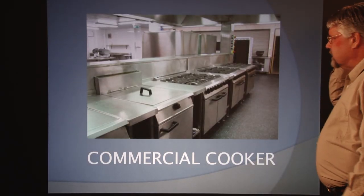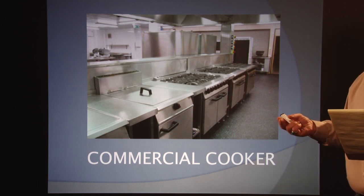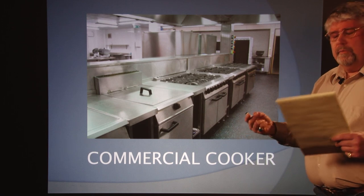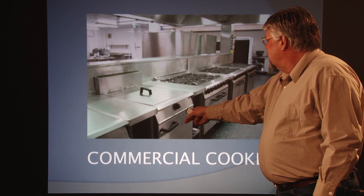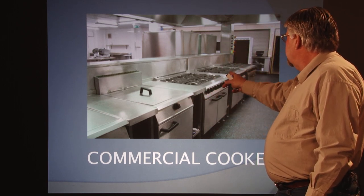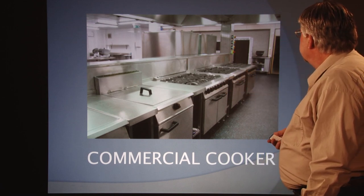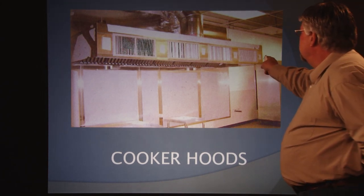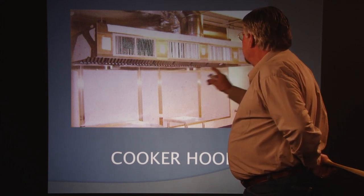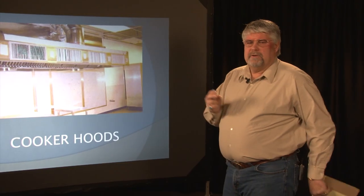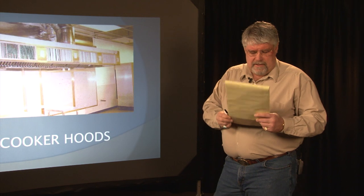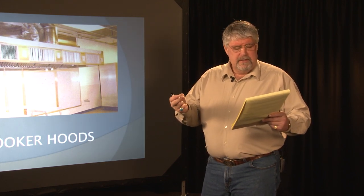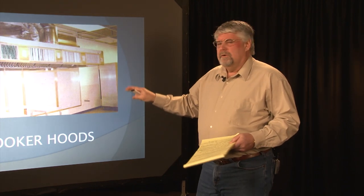Commercial cookers. These are appliances used in commercial food establishments for heating and cooking food, which produce grease, vapors, steam, fumes, smoke, or odors that are required to be removed. We've got a hot plate with a controller and a hood with gas burning stove burners. Let's talk about cooker hoods. There are six types of cooker hoods. If a report calls out a double island canopy hood, you'll know from this video exactly what that is.